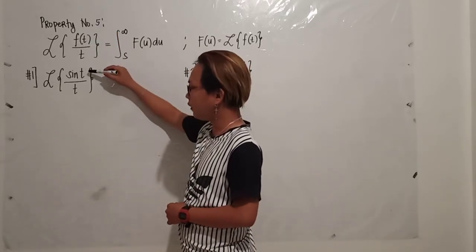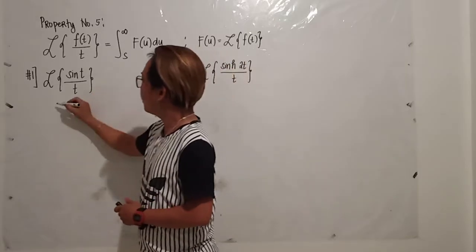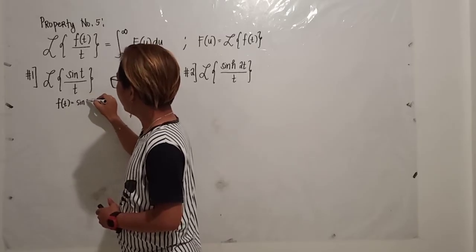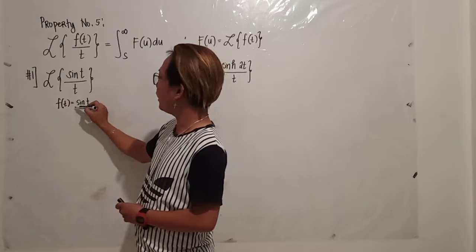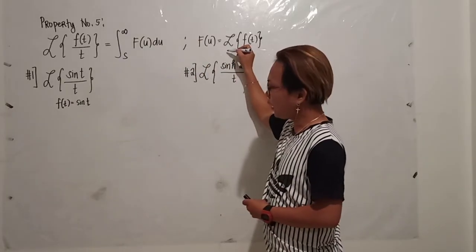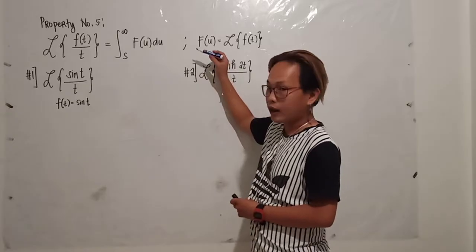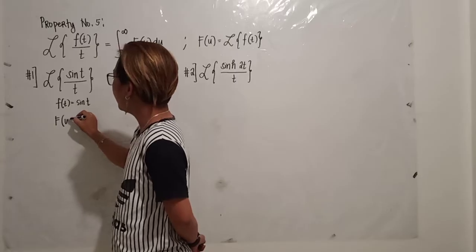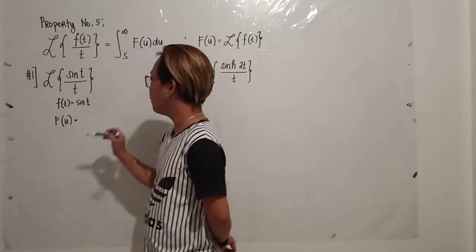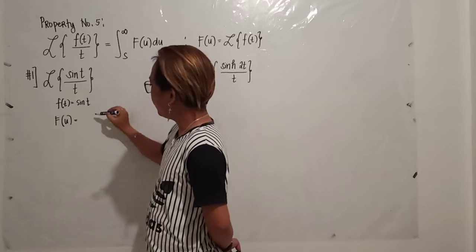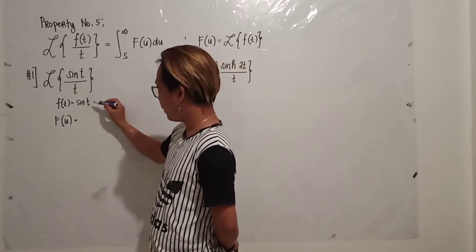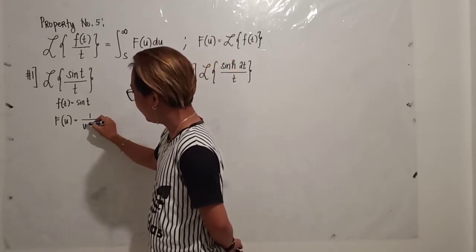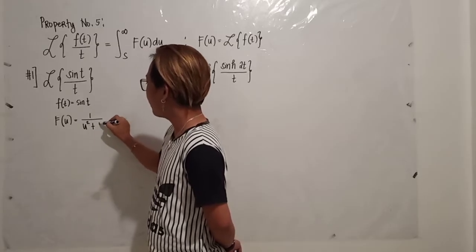For example, you have the sine of t over t. So you will have your f of t as the sine of t. Then you need to get the Laplace transform of your f of t. But instead of using s, you will use u. So getting the Laplace transform of sine of t, you will have the f of u. You will have a over s squared plus a squared, so you will have 1 over u squared plus 1.